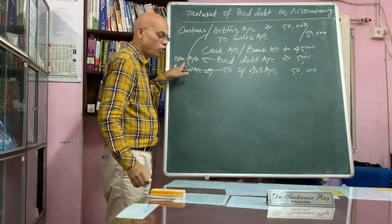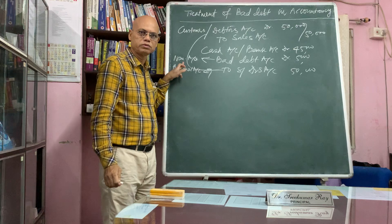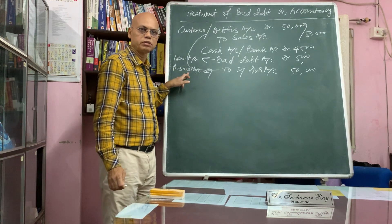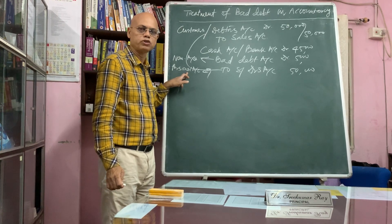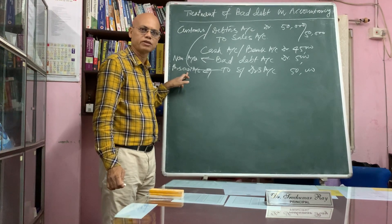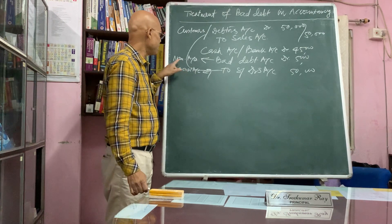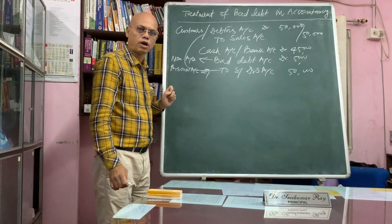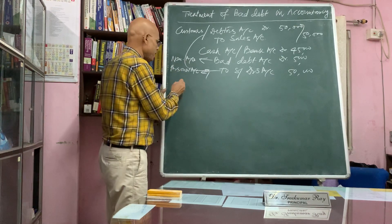All nominal accounts are closed at the time of finalization of accounts. The balance of the debtors account, being a personal account, along with real account balances, is put into the balance sheet according to the nature of the balance. Therefore, bad debt account should be closed, and there are two ways to do so.